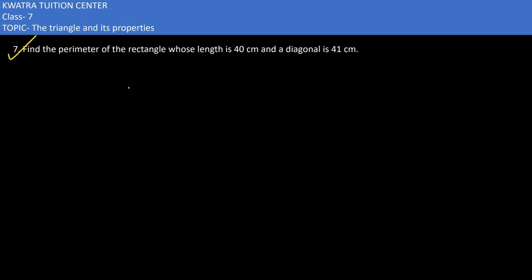In the 7th one, it says find the perimeter of the rectangle whose length is 40 cm and the diagonal is 41 cm. Rectangle is given to you. The length is 40 cm and the diagonal is 41 cm.